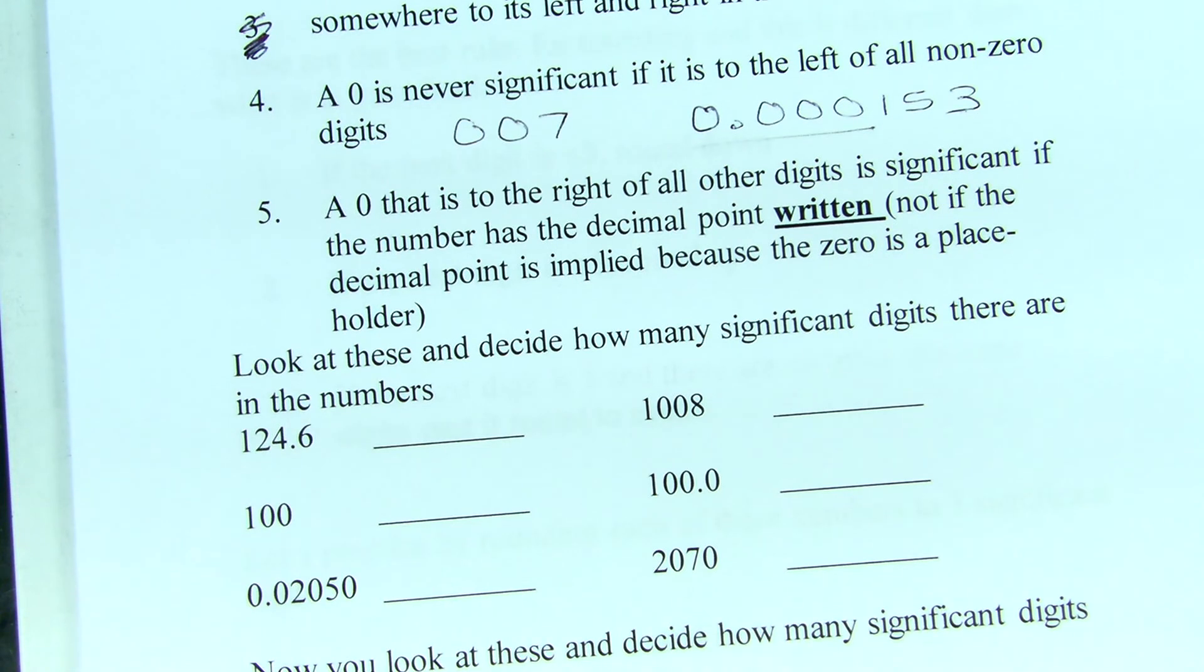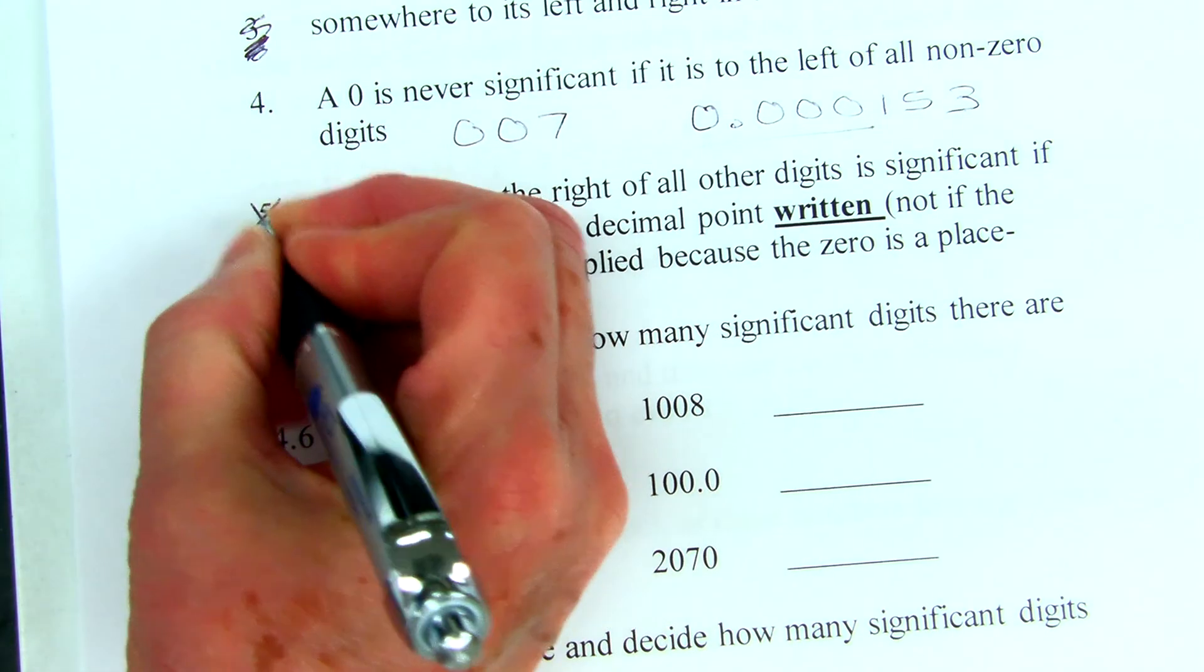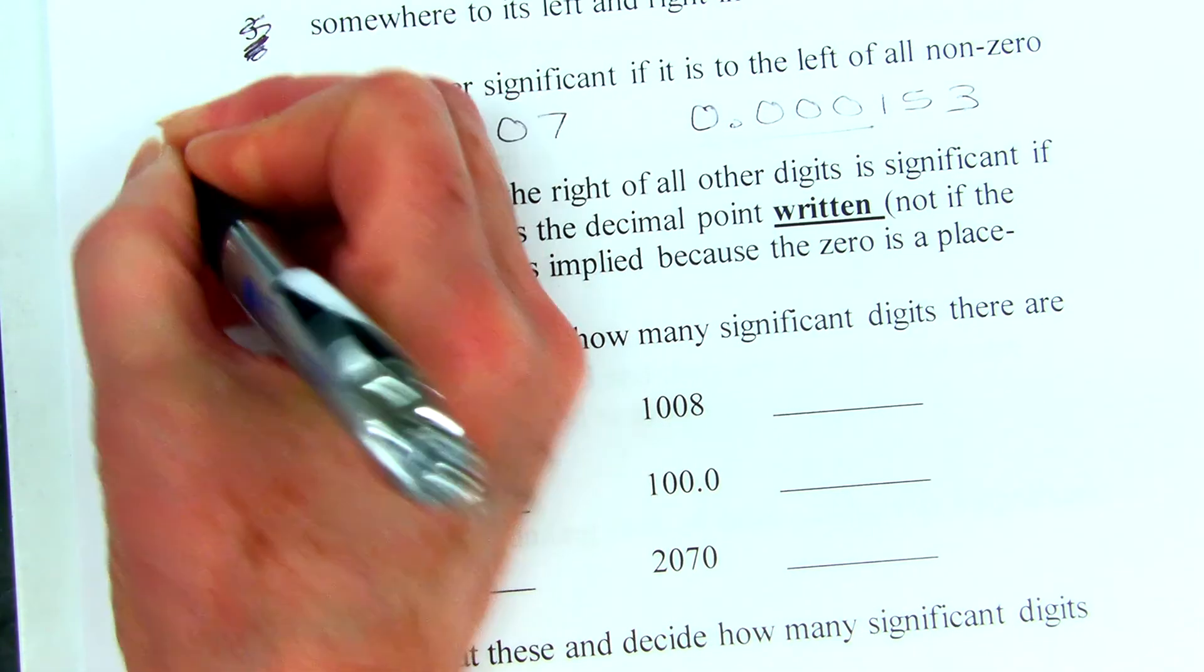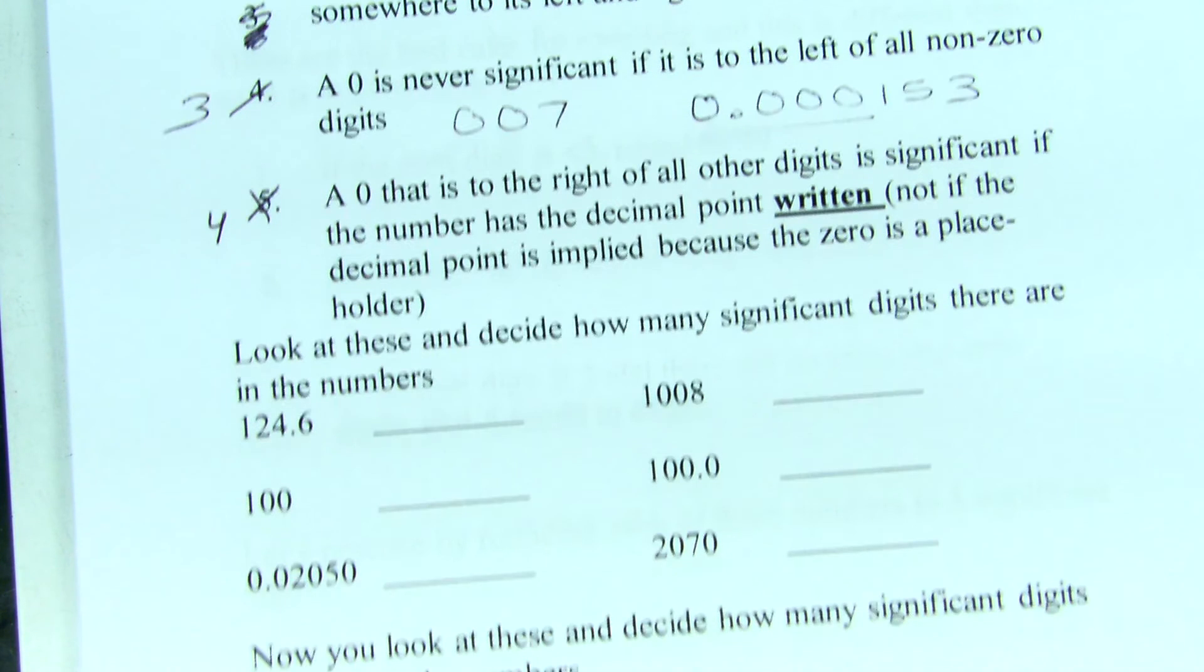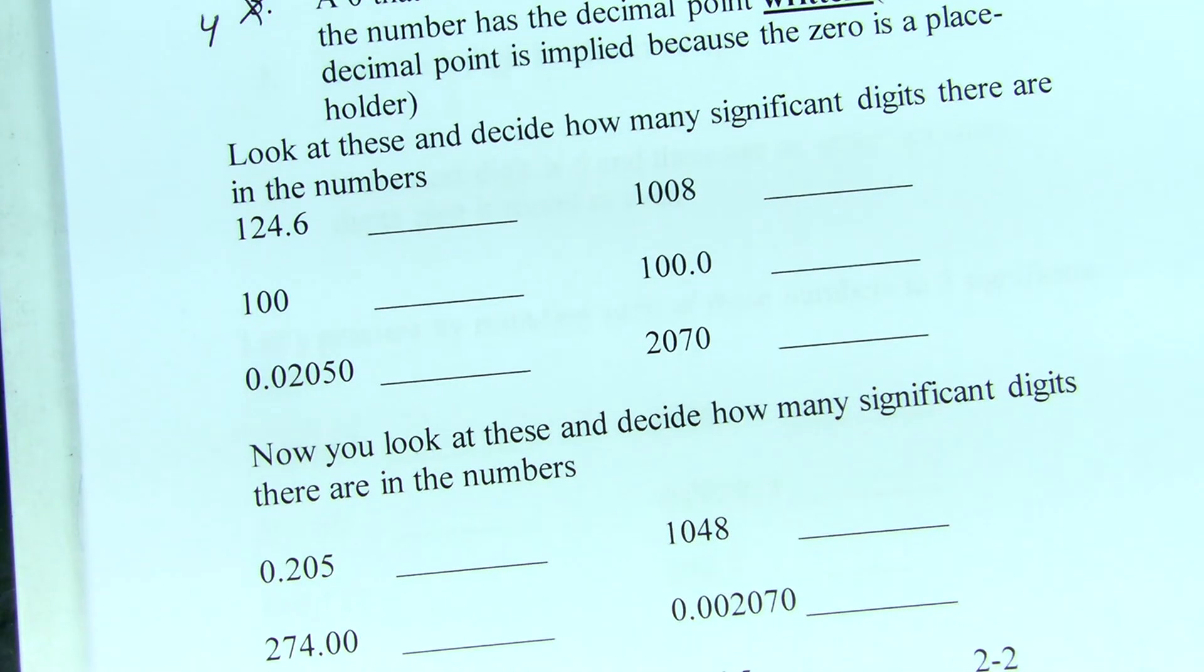Now, the last one is the tricky rule. A zero that is to the right of all other digits is significant if the number has the decimal point written in the number. Now, there is always a decimal point implied and we know where it is but it has to be written down on the paper for it to count as a significant zero. So, what we are going to do now is look at some numbers and decide how these rules apply.